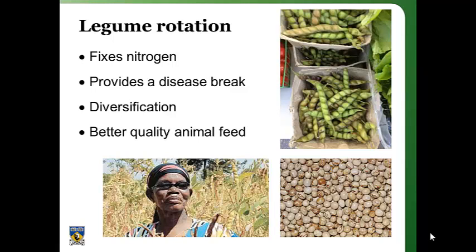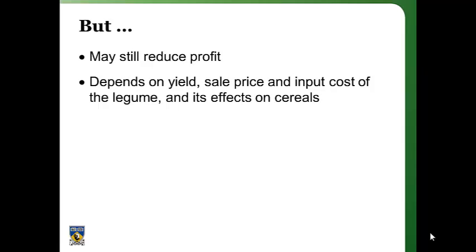The third component is the legume rotation. Advantages include: it fixes nitrogen, may provide a disease break, provides diversification for risk reduction, and legume crop residues may be better quality due to higher protein content than cereal crops. However, the legume rotation may still reduce profit — it's a numbers game. It depends on yield, sale price, input costs, and the rotation effects on subsequent cereals before you can say whether it's a net benefit.